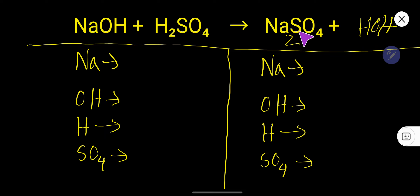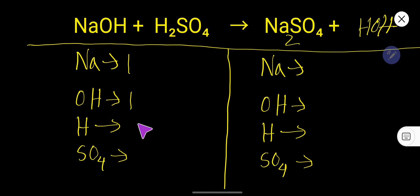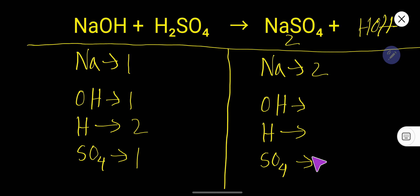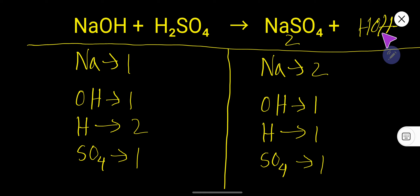On the left hand side we have one sodium, one OH, then two hydrogen, and we have sulfate which is one. On the right hand side we have two sodium, sulfate which is one, hydrogen one, and OH is also one. This is the trick — you have to write water as HOH.